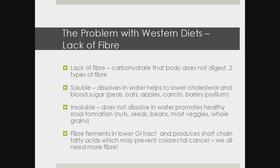Another problem with today's diets is the lack of fiber. Fiber is a carbohydrate our body does not digest, and there are two types. Soluble fiber dissolves in water and helps lower cholesterol and blood sugar — found primarily in peas, oats, apples, carrots, barley, and psyllium. Insoluble fiber does not dissolve in water and promotes healthy stool formation — found in nuts, seeds, beans, and most vegetables and whole grains. Fiber ferments in the lower GI tract and produces short-chain fatty acids which our body needs, and can help prevent colorectal cancer. In a nutshell, we all need more fiber.